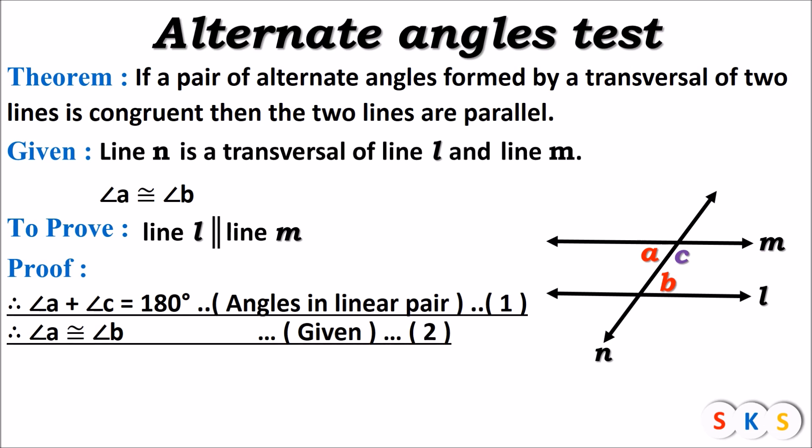Now what we will do is replace angle a in equation one with angle b, because a and b are equal. So we will replace a by b in equation number one, and we get a new equation: angle b plus angle c equals 180 degrees. This we got from equations one and two.